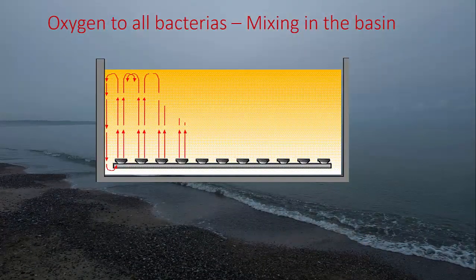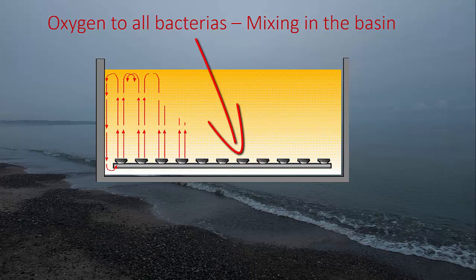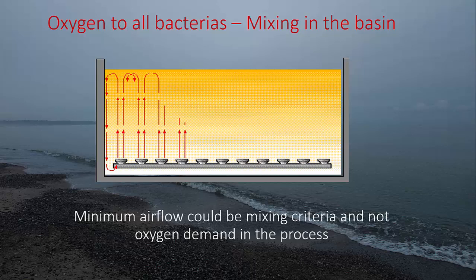Now let's look at the mixing in the basin. You have all the bacteria — all the sludge — that needs to be mixed so that the bacteria get into good contact with all the air bubbles giving them oxygen. In the schematic you can see the aeration system at the bottom, showing how the air circulates and mixes the sludge in the tank for very good mixing. When designing aeration, one thing to consider is that the minimum airflow could be determined by what we call a mixing criteria — because you always have to keep a good mix in the tank. That airflow for mixing could actually be more than the bacteria need for oxygen.